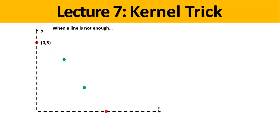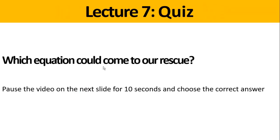Let's put some coordinates on each point. We have this point: 0,3. This one: 1,2. The other green point: 2,1. And the last red point: 3,0. Okay, time for a quiz — which equation could come to our rescue in your opinion?